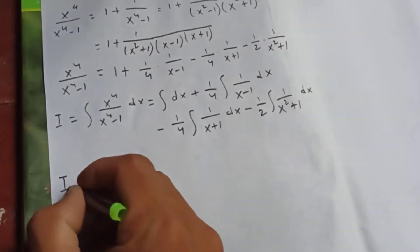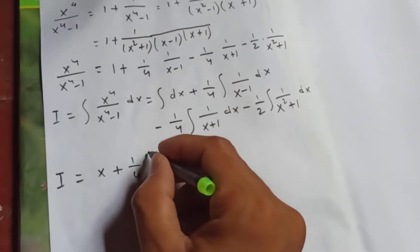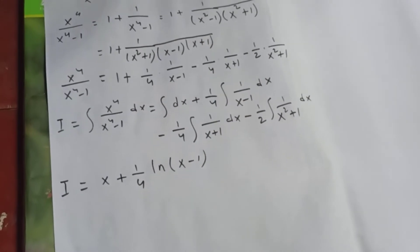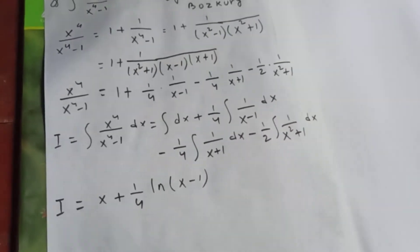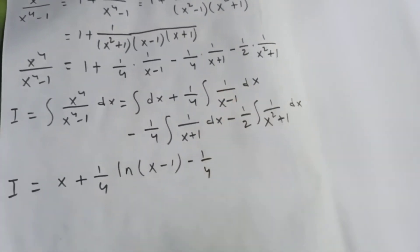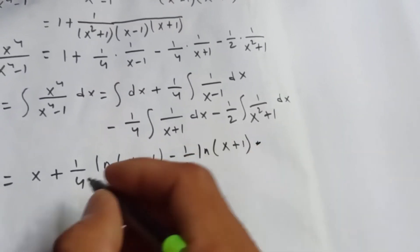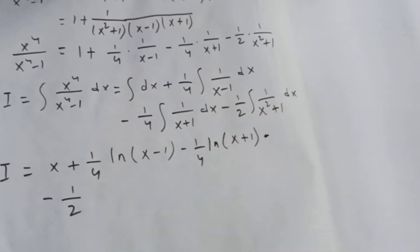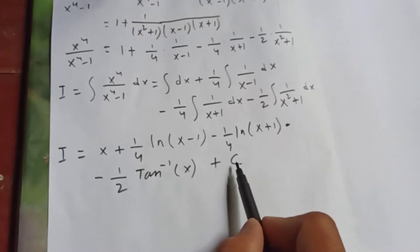The integral of dx is x. Plus one-fourth, and the integral of 1 over x minus 1 is natural log of x minus 1 — you can check my other video, since differentiating the denominator gives 1. Minus one-fourth times natural log of x plus 1. Minus one-half, and the integral of 1 over x squared plus 1 is the well-known result: inverse tangent of x.